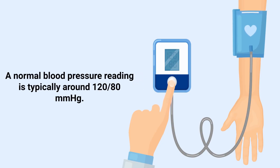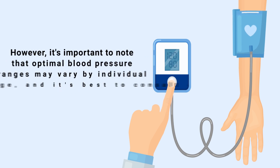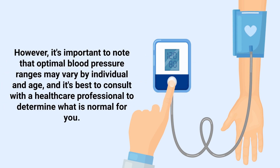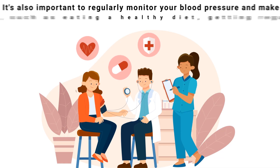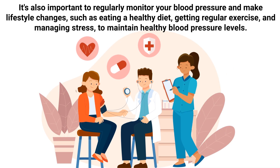A normal blood pressure reading is typically around 120 over 80. However, it's important to note that optimal blood pressure ranges may vary by individual and age, and it's best to consult with a healthcare professional to determine what is normal for you.